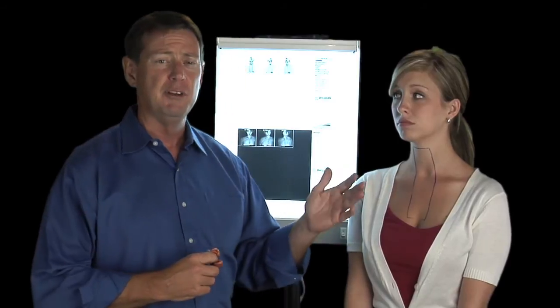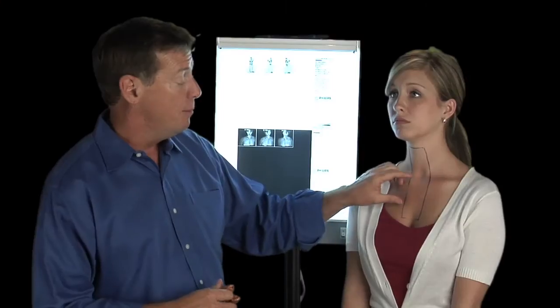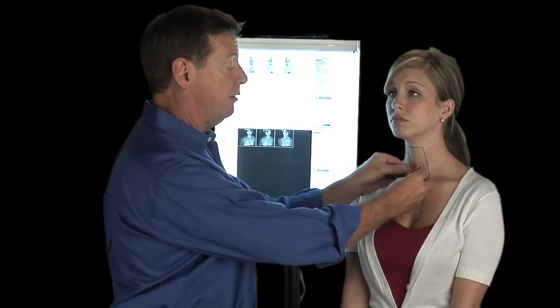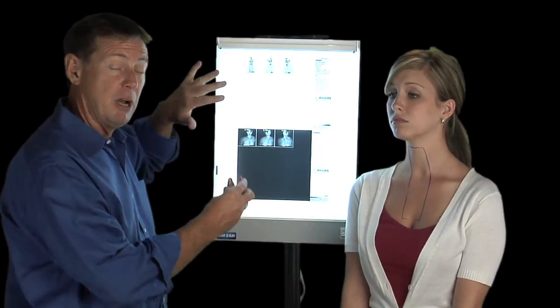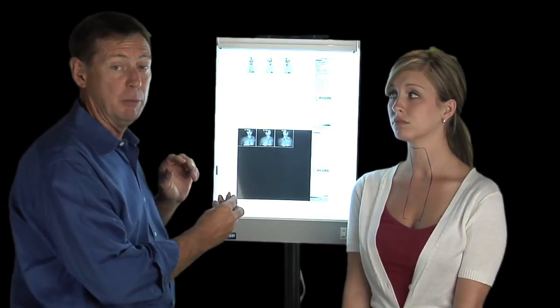As a review, parathyroid tumors can be anywhere in this box, but they must be inside this box. They can't be outside this box. Most of them are around the thyroid gland, but some can be up high or some down low. Let's look at some x-rays now and talk about some common and not so common places where parathyroid tumors can be.